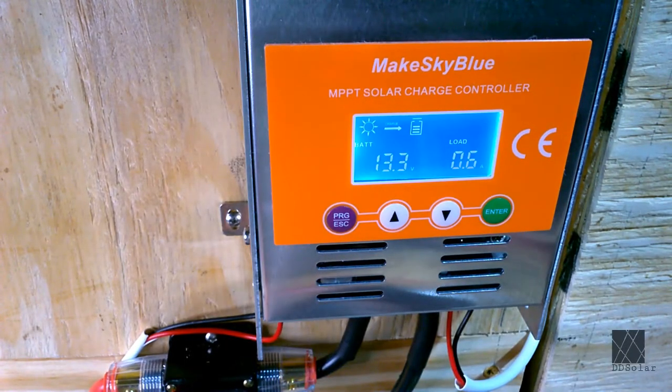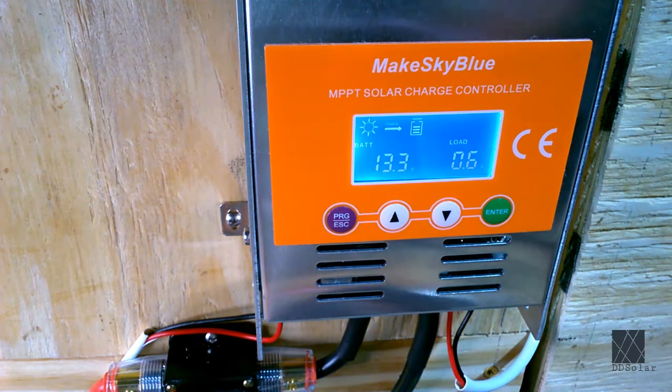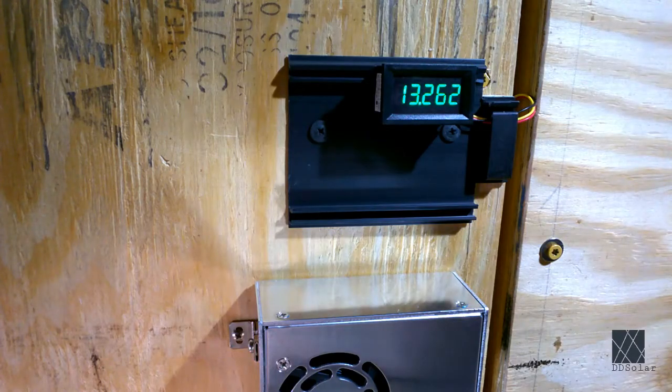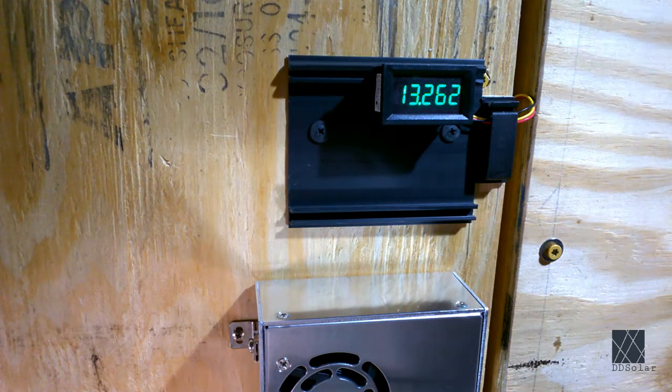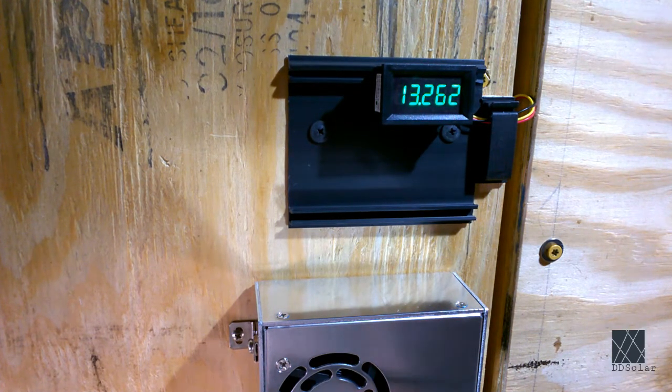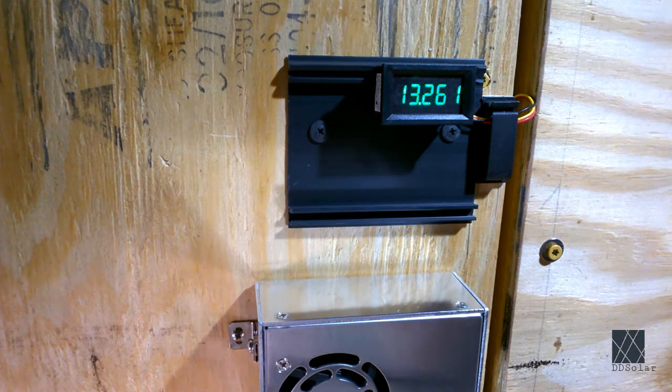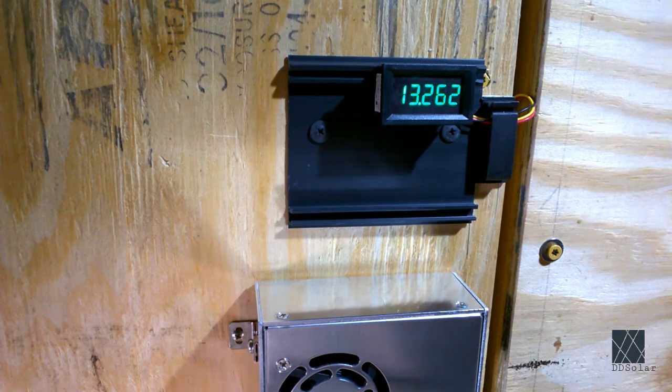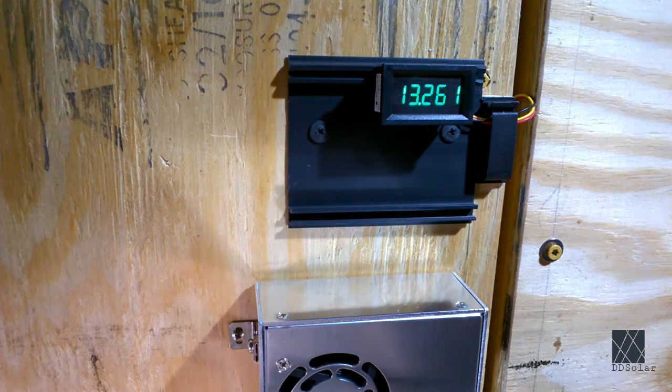The charge controller says 13.3 volts at 0.6 amps. But the precision voltmeter says 13.262 volts. That's a huge difference and as you can see that third digit is already changing. It's going back and forth between one and two.